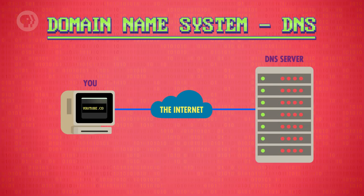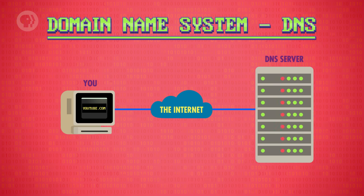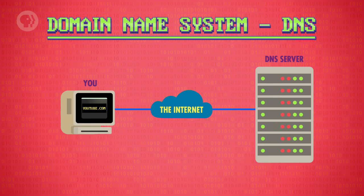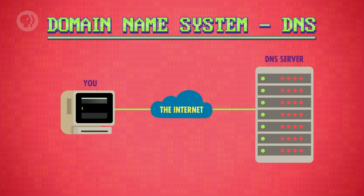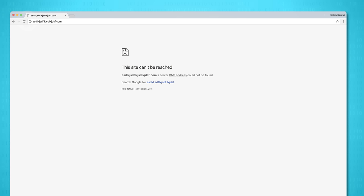When you type something like youtube.com into your web browser, it goes and asks a DNS server — usually one provided by your ISP — to look up the address. DNS consults its huge registry and replies with the address, if one exists. In fact, if you try mashing your keyboard, adding .com, and then hit enter in your browser, you'll likely be presented with an error that says DNS failed. That's because the site doesn't exist, so DNS couldn't give your browser an address.